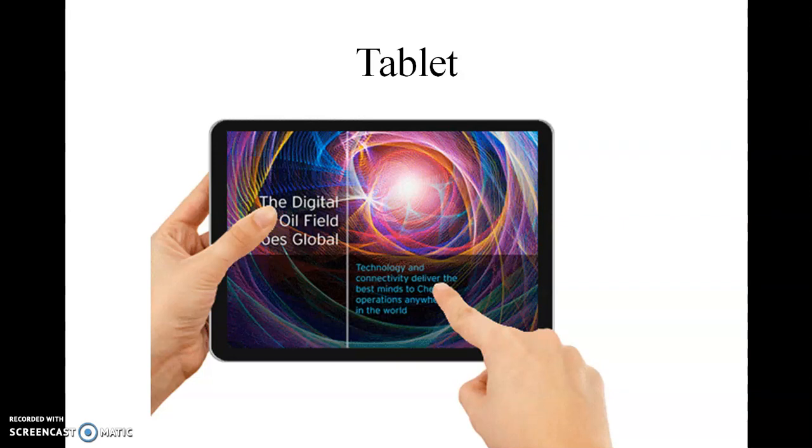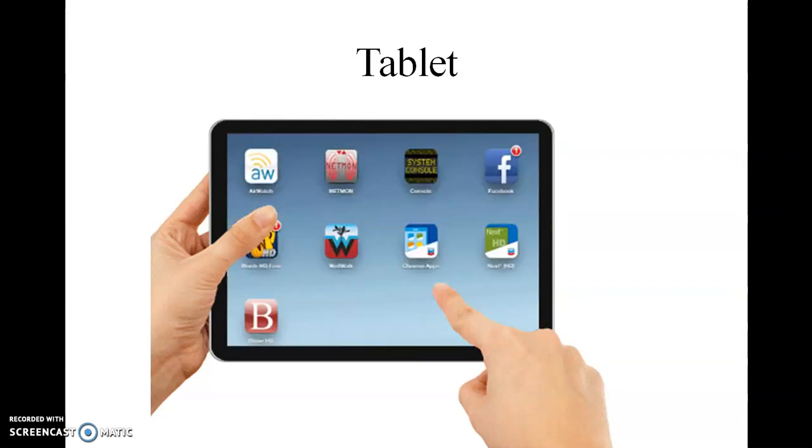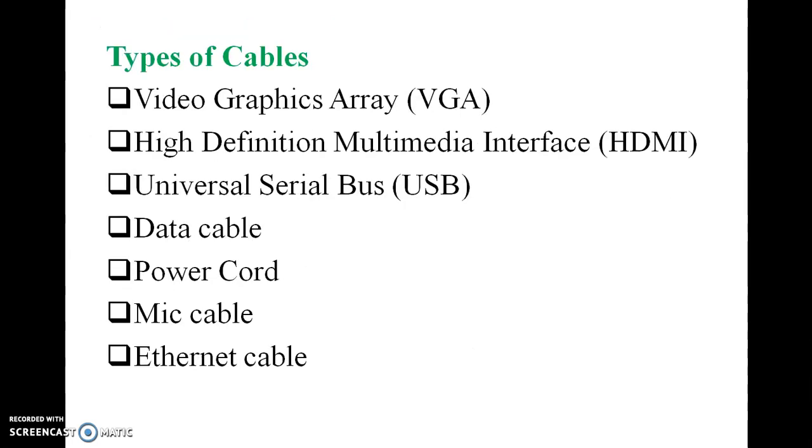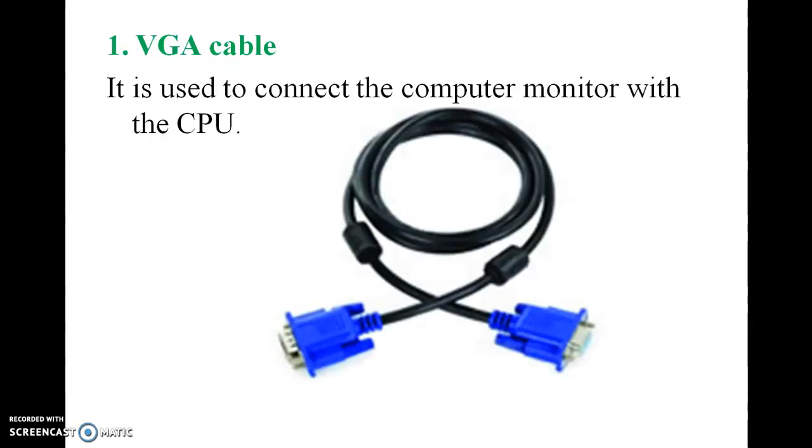Connecting the computers. Various parts of computers are linked through connection cables. We will see some examples of types of cables: Video Graphics Array (VGA), High Definition Multimedia Interface (HDMI), Universal Serial Bus (USB), data cable, power cord, mic, ethernet cable. VGA cable is used to connect the computer monitor with CPU.